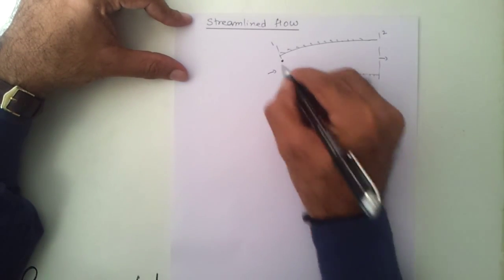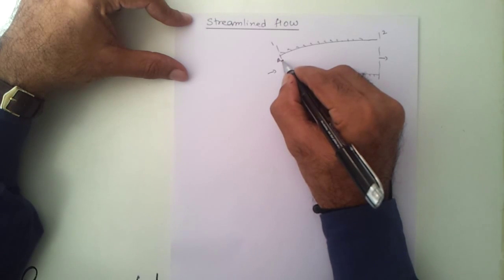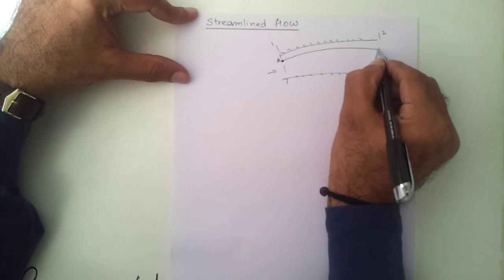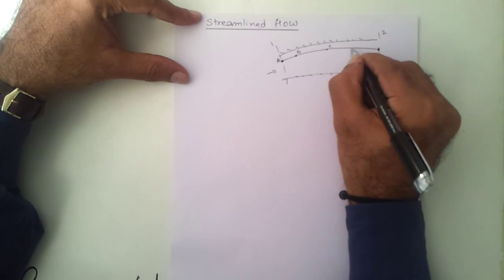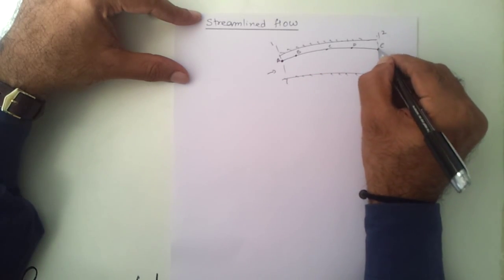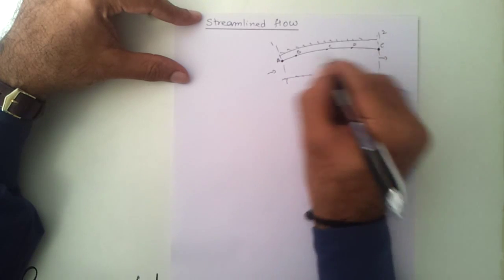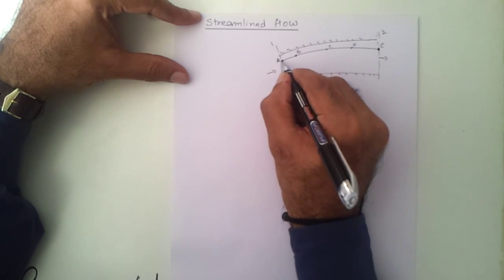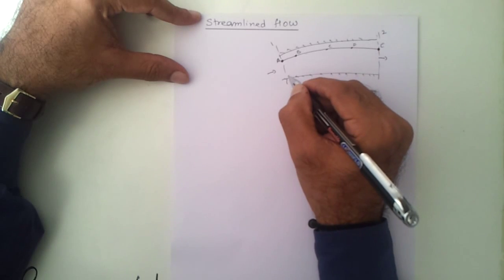If this flow is streamlined, let us say there is one particle of the liquid entering at a particular location — let us call this location A. This particle will follow a definite path, coming out at point E through locations B, C, and D. The next particle which enters at A will necessarily follow this same path — not any other direction.